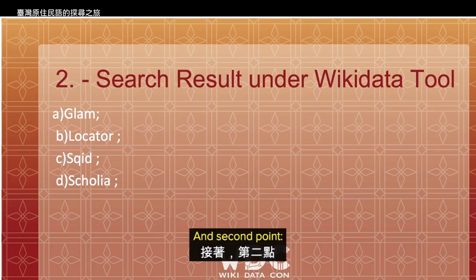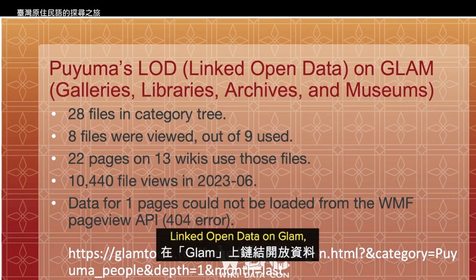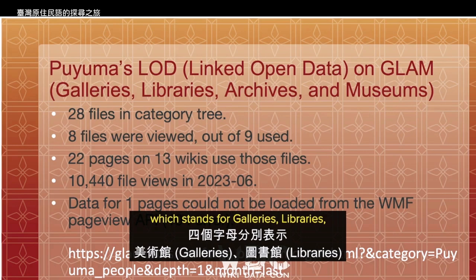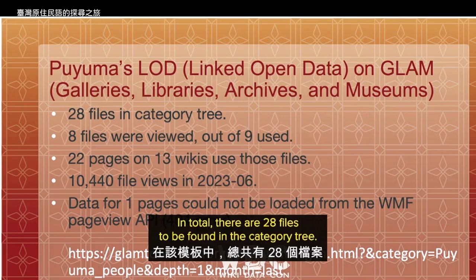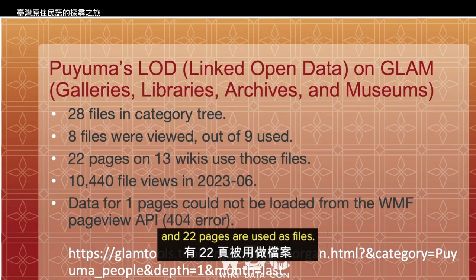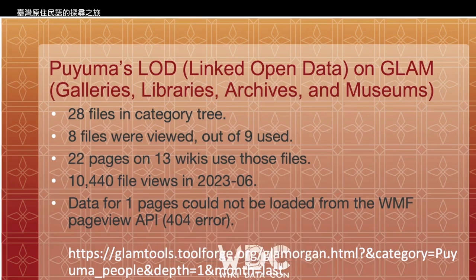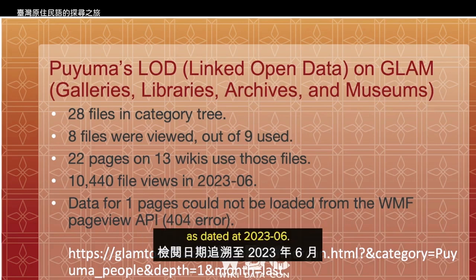The second point covers search results on Wikidata tools. By Puyuma's LOD — linked open data — on GLAM, which stands for Galleries, Libraries, Archives, and Museums, in total there are 28 files filed in the category. Files were viewed and 22 pages use those files. In total, there are more than 10,000 file views as of 2023.06.